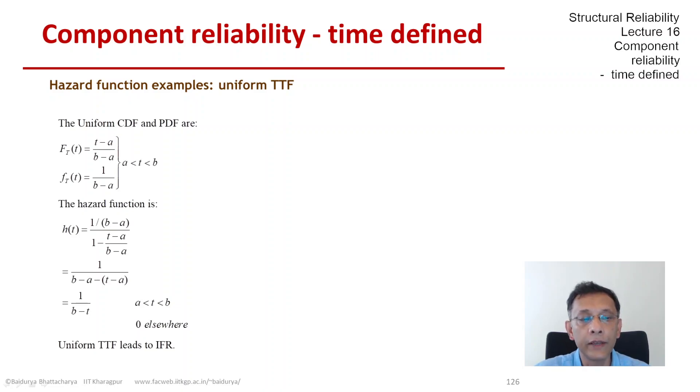So the constant failure rate is a very special type of hazard function. But here, the uniform TTF leads to an increasing failure rate.